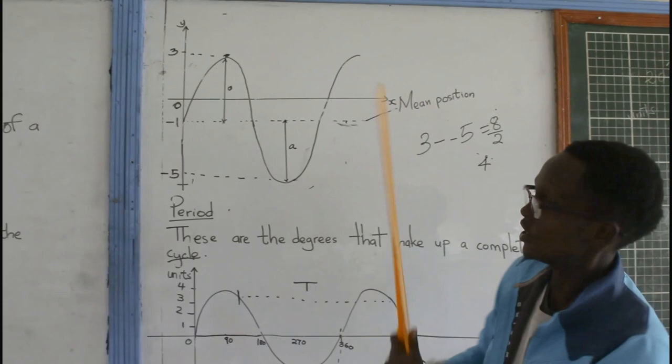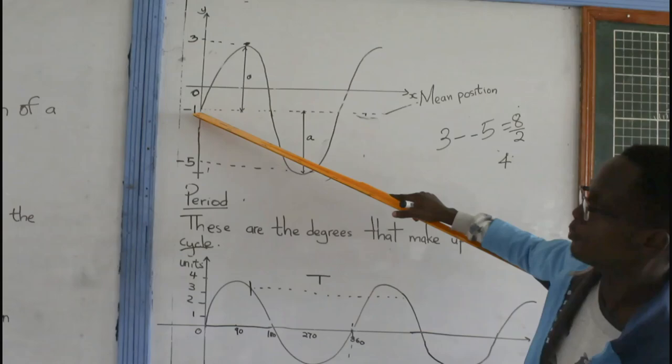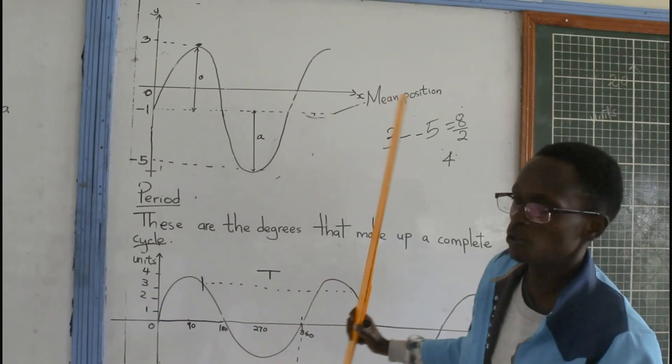So, the mean position is supposed to be 4 units from the 3. So, from the 3, you go down to 1, 0. And the 4th unit places you at y equals negative 1. So, for our case here, the mean position equals to the line y equals to negative 1. I hope that's clear.